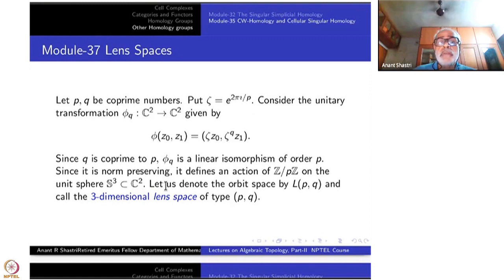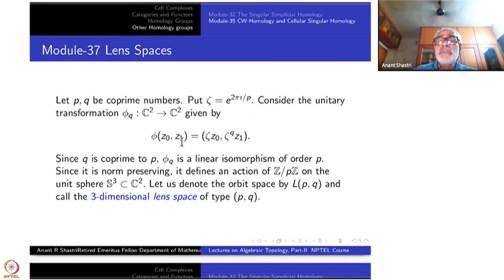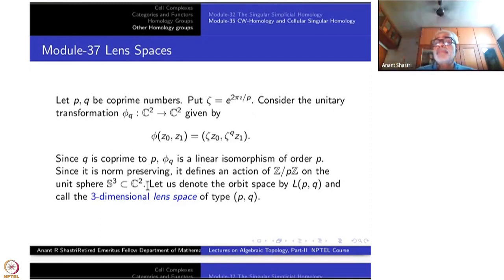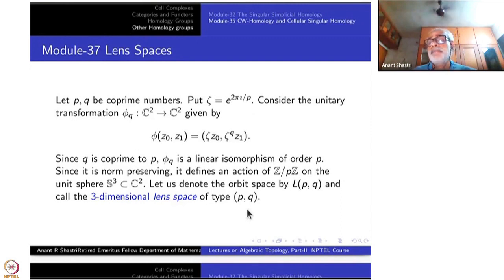Since it is norm-preserving, it defines an action of G = ℤ_P, the cyclic group of order P, on the unit sphere S³. Because it is norm-preserving, if a point is inside S³, its image under φ will also be inside S³. Let us denote the orbit space by L(P,Q) — the orbit space of S³ under this action — and call it the three-dimensional lens space of type (P,Q). For each pair of co-prime integers, you have a lens space.